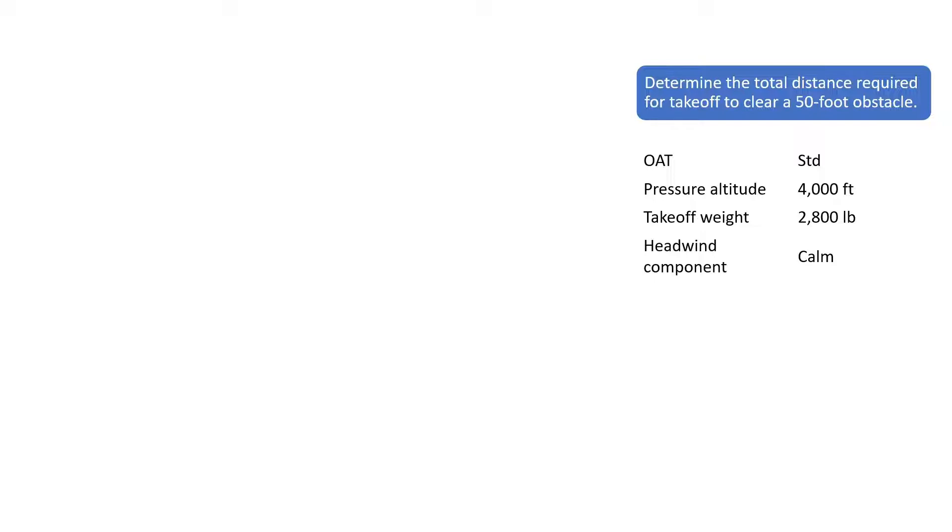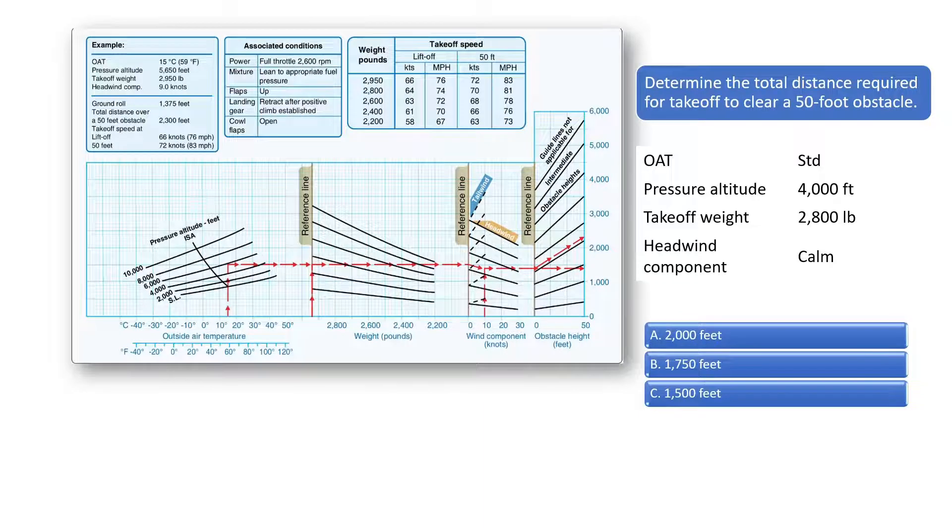First start by drawing an arrow up from the standard air temperature to the pressure altitude line of 4,000 feet as illustrated by the yellow arrow in the chart. Then draw a line to the right to intersect the takeoff weight line and follow the line down to the takeoff weight of 2,800 pounds. See the blue arrows in the chart.